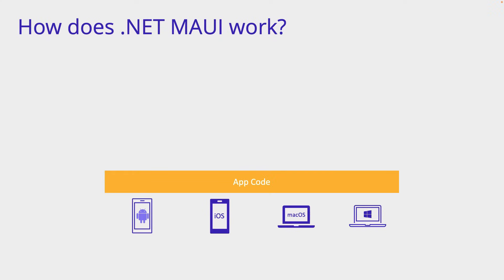Everything starts with your app code. This is where you want to spend all of your time being productive. This is your business logic. This is your app, your billion-dollar idea. But to get there, we need to go through a couple of layers.